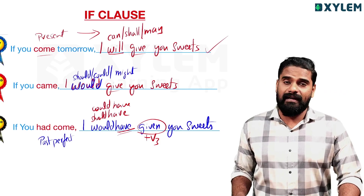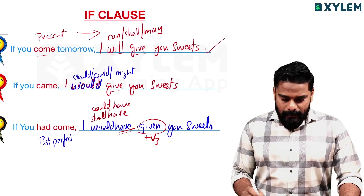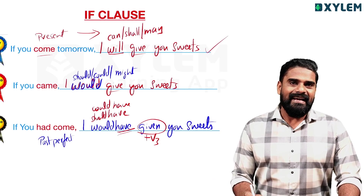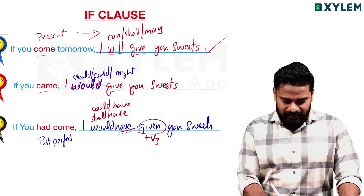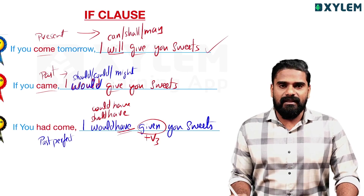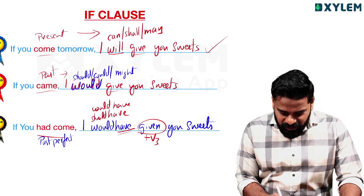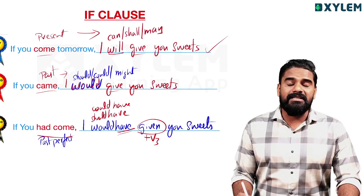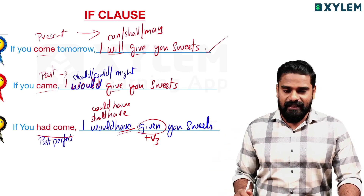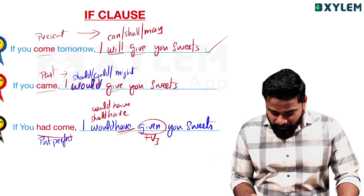Let's review the details of all three. First condition: if clause = present tense; main clause = will. Second condition: if clause = past tense; main clause = would/should/could/might. Third condition: if clause = past perfect (had + V3); main clause = would have / could have / should have / might have + V3.